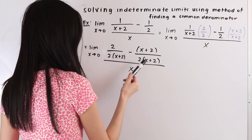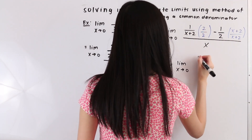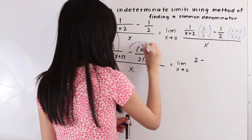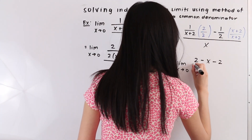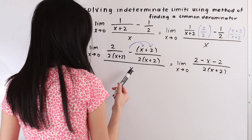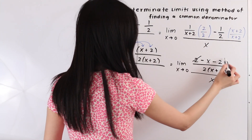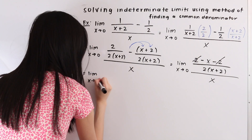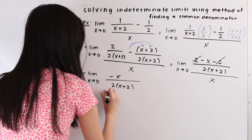Now let's get these two fractions under one denominator. We have the limit as x approaches 0, and we distribute the negative sign to our x term and our 2, so we have minus x minus 2, all over 2 times x plus 2, and this is all over x. We can see in the numerator that the 2 cancels out with the negative 2, and so we are left with the limit as x approaches 0 of negative x over 2 times x plus 2, all over x.